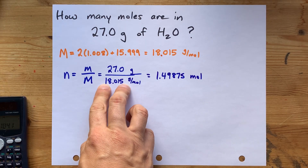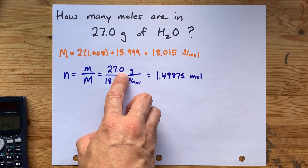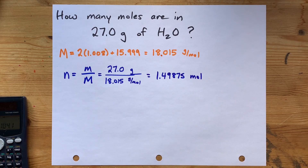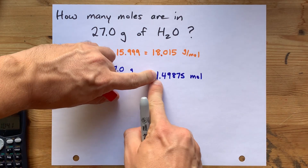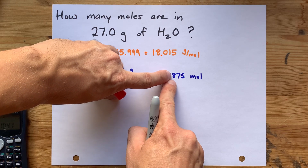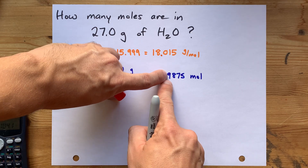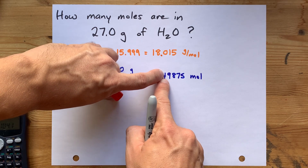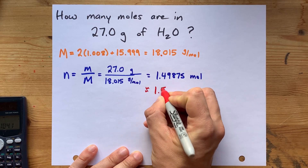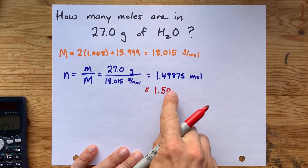This number (18.015) has five significant figures — 1, 2, 3, 4, 5. This number (27.0) only has three. So I need to round my final answer to three significant figures. There's number 1, number 2, number 3. I need to look at the next number — it's bigger than 5, so I'm rounding up. That's a 9, so when I round it up, I've got to carry an extra 1 over. That means 4, 9 becomes 5, 0 — because that's the way rounding works.